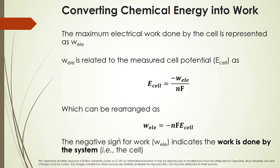The maximum electrical work done by the cell is represented as W_ele, and it is related to the measured cell potential. We can rearrange this to define work in terms of the cell potential and the charge transferred. The negative sign here is very important — it indicates that the work is done by the system, i.e., by the electrochemical cell.